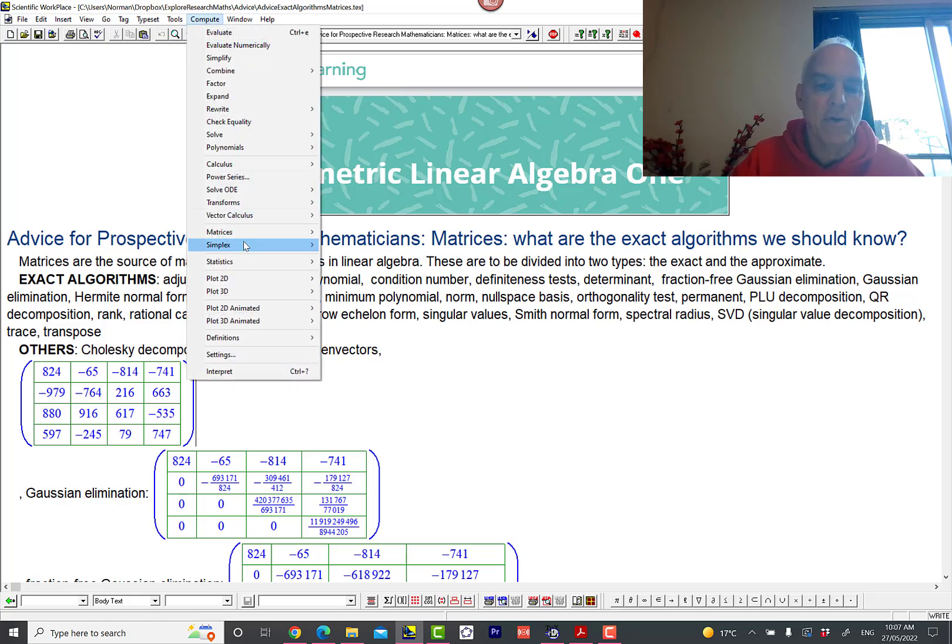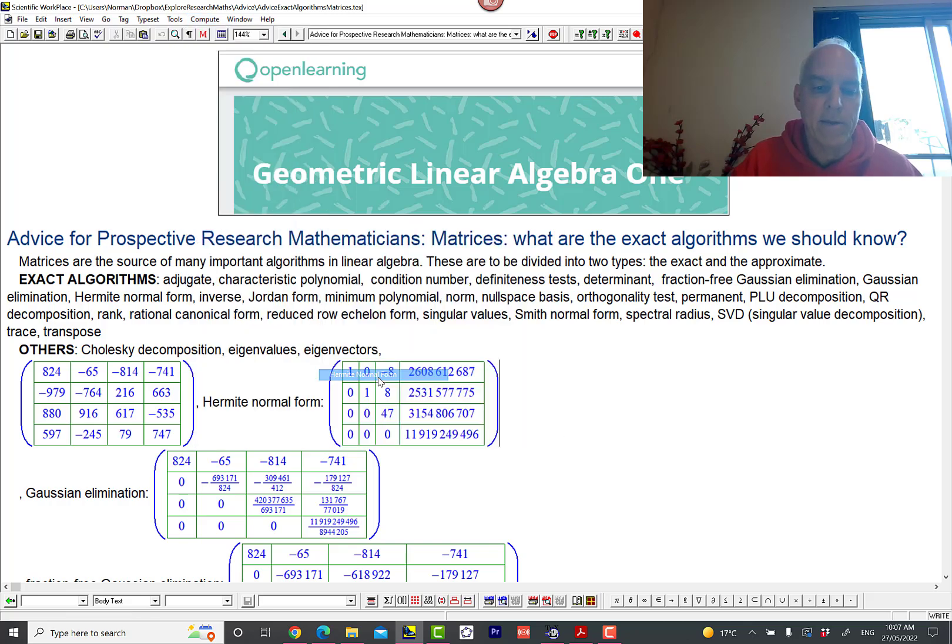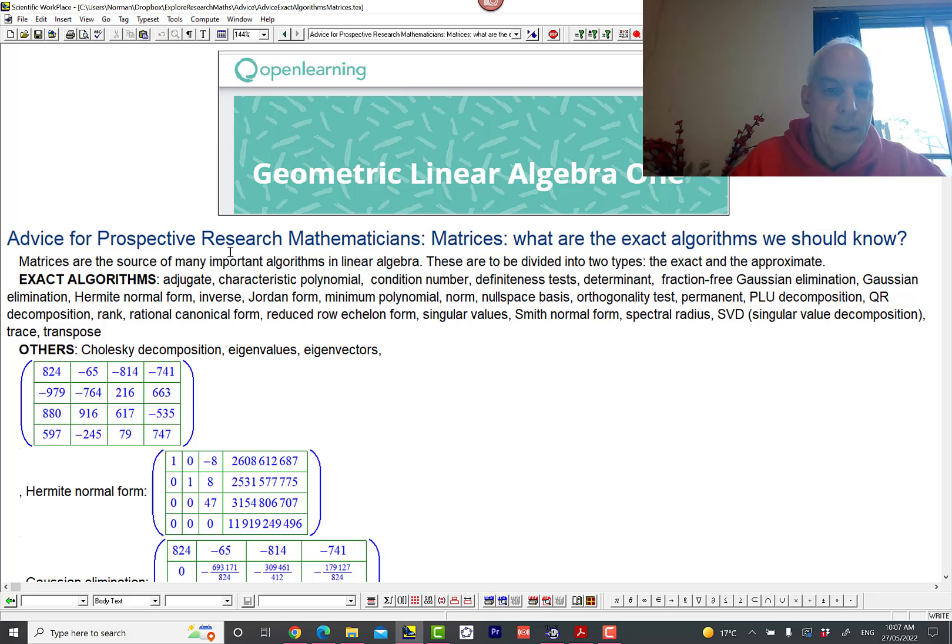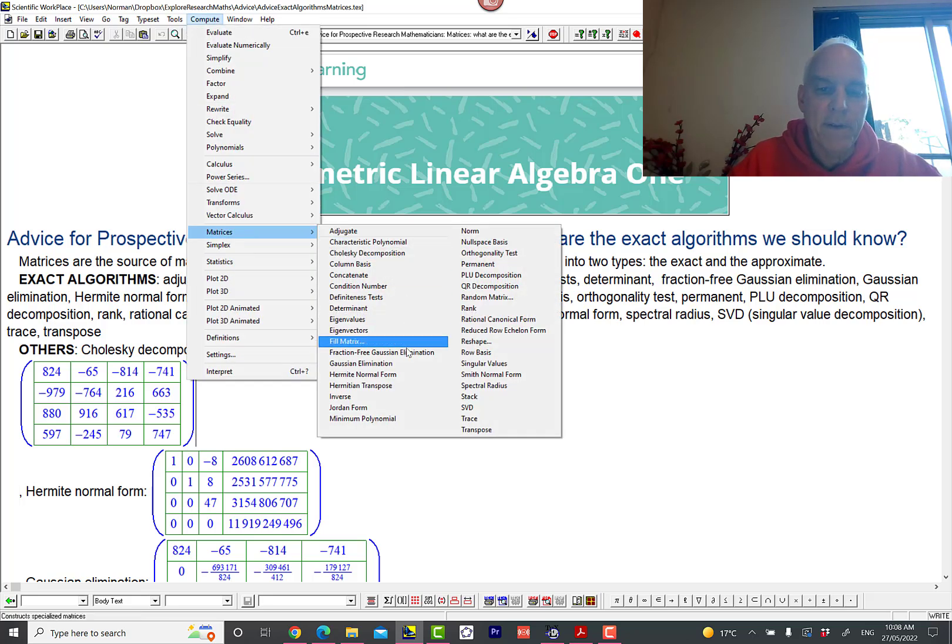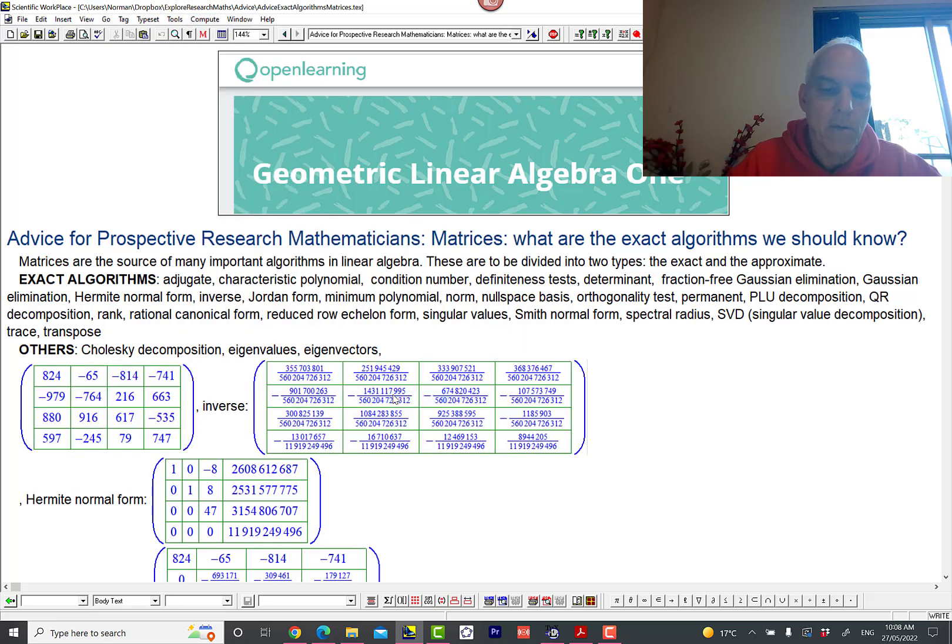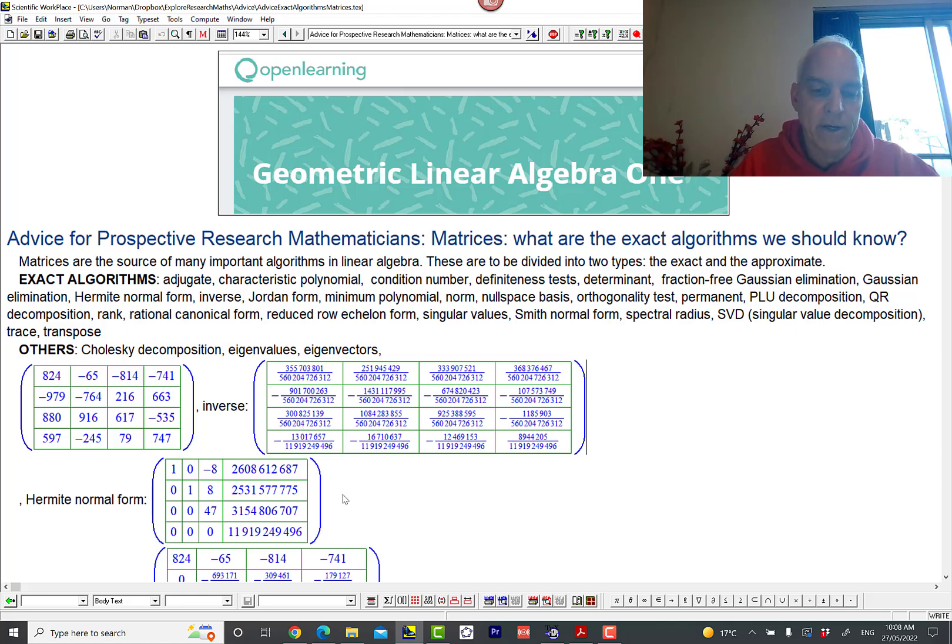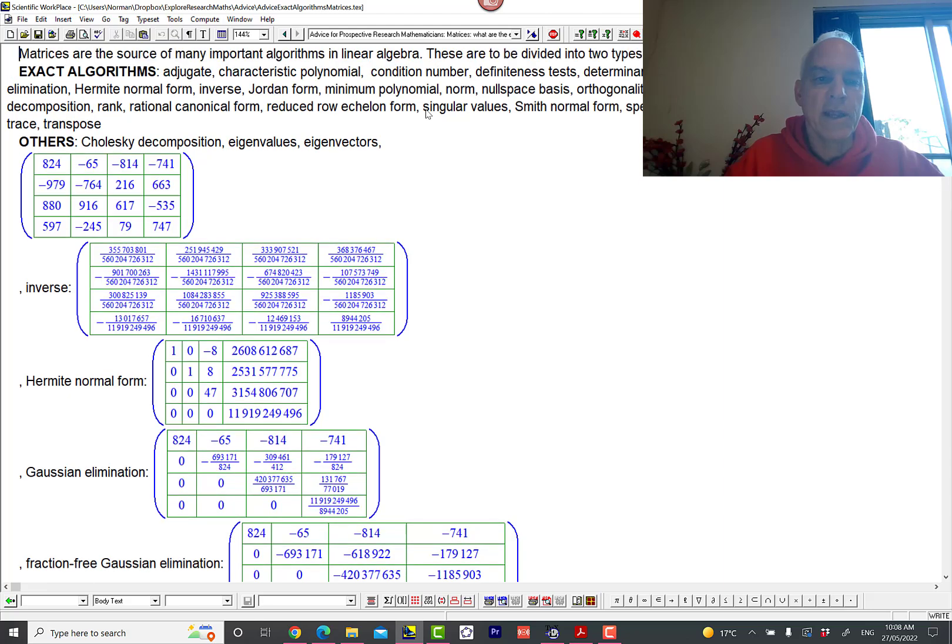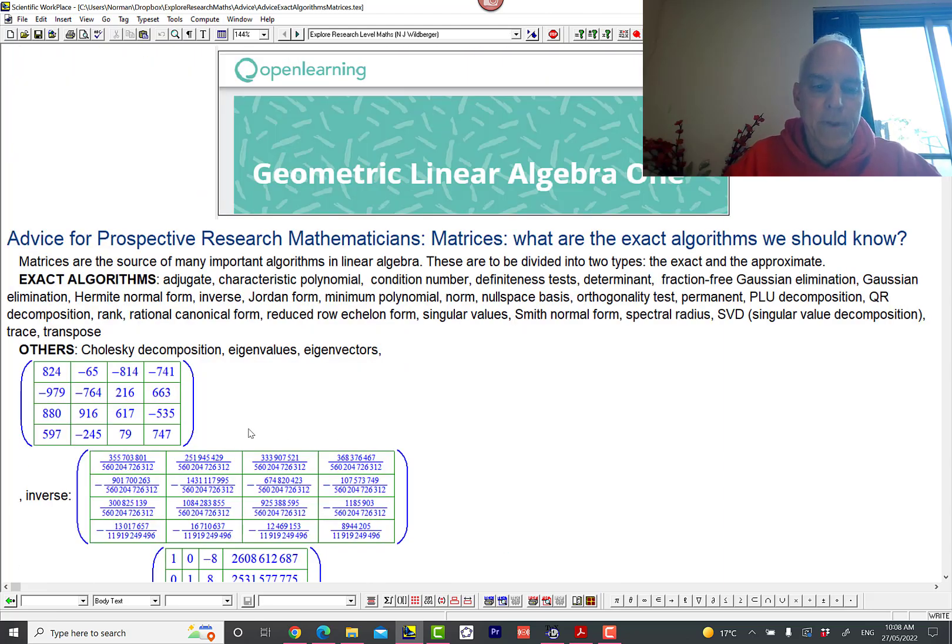Next we have the Hermite normal form. That's also something that's exact. I think I talk about that in my Math Foundations series at some point. Then we have what's probably almost surely the most important algorithm in linear algebra, which is calculating the inverse of a square matrix. Here's the inverse there. It's a lot like the adjugate except that there's a denominator—the denominator is the determinant. So the inverse is an important calculation which is exact.